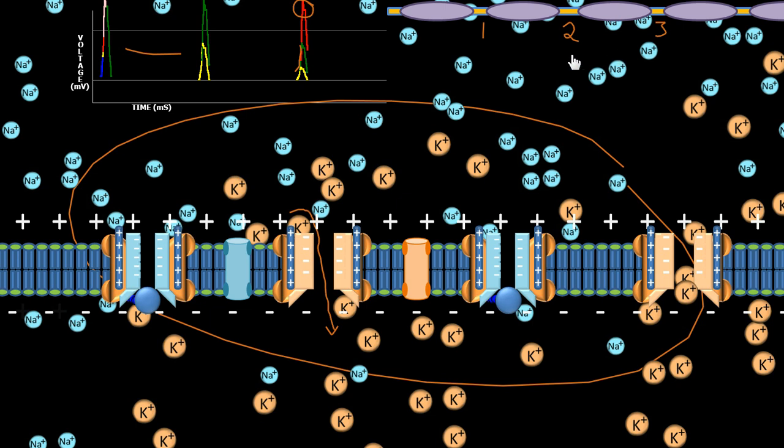Their effects are going to be enormous in comparison to what's happening at node 3 a few millimeters down the road. That's the key point — the signal propagates in only one direction due to the refractory state of the nodes behind it.